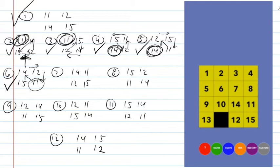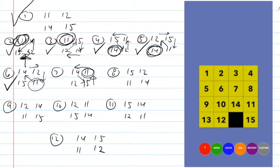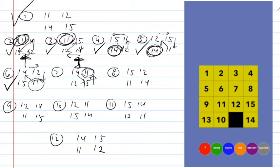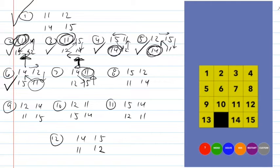In case seven, again neither eleven nor fourteen is in the right spot, but since the eleven is on the edge I can easily get it into its proper spot by moving the twelve over and doing a counterclockwise cycle. Now it's turned into case three — the eleven is in the right place — so I move it over, cycle those three tiles, and that takes care of case seven.